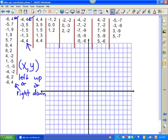If it's a negative, we go to the left. If it's positive, we go to the right. If it's negative, we go down. If it's positive, we go up. It's simple as that.